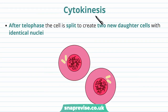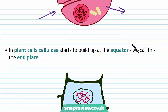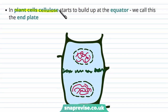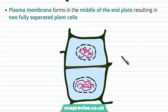Cytokinesis is the last stage in cell division but is not part of mitosis. Mitosis describes the movement of chromosome copies to each pole; cytokinesis is separate. The cell splits into two new daughter cells with identical nuclei and the same genetic information. In animal cells the plasma membrane folds inwards, pinching at two opposite points until the two daughter cells separate. In plant cells, cellulose builds up at the equator forming a cell plate, which then helps form the cell walls of each new plant cell, with a plasma membrane forming in the middle of the cell plate to produce two fully separated plant cells.